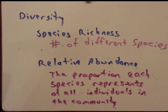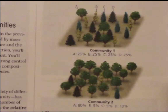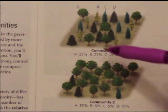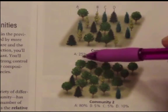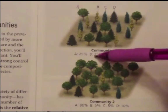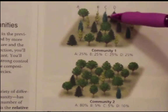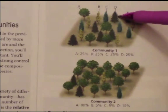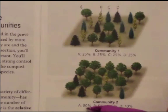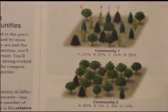To further discuss this, let's look at a figure in your textbook and ask which of these two communities is more diverse. Looking at species richness, we can see that community 1 contains species A, B, C, and D. Community 2 also contains the same four species. So at the level of species richness, these two communities are the same.